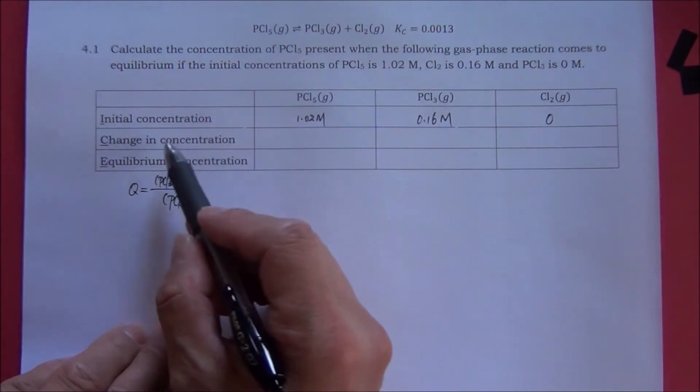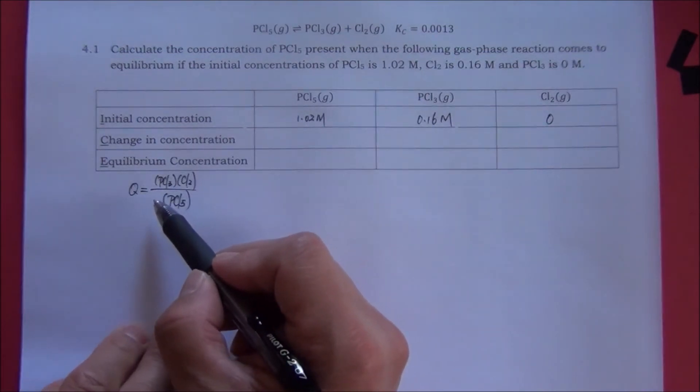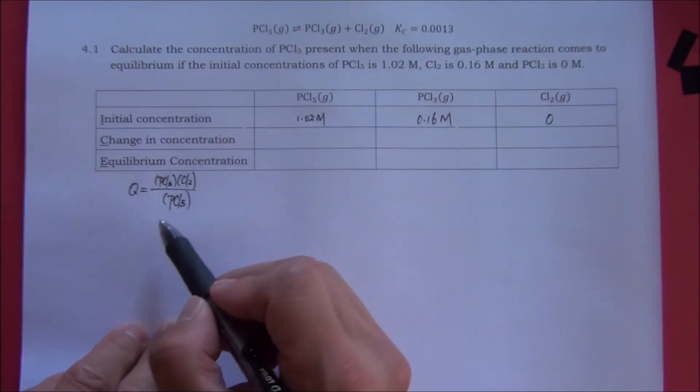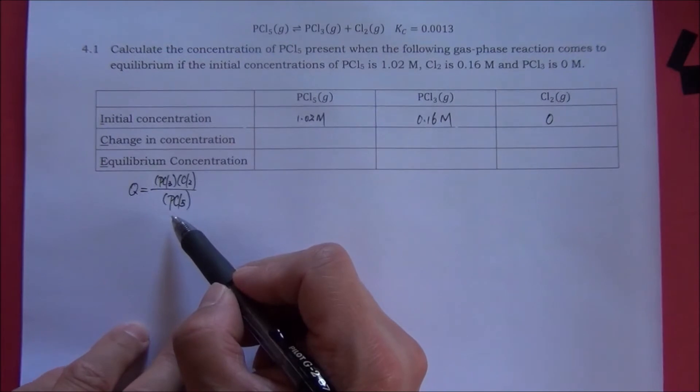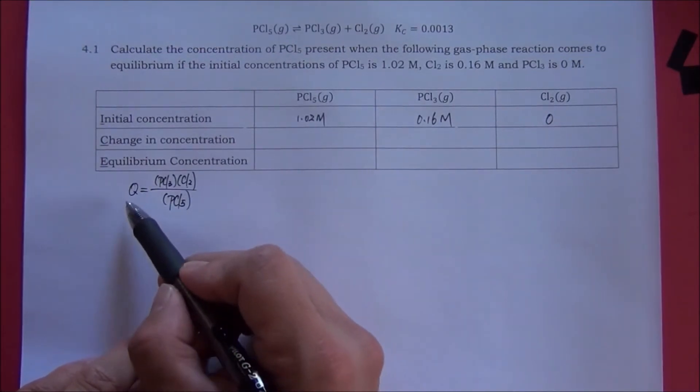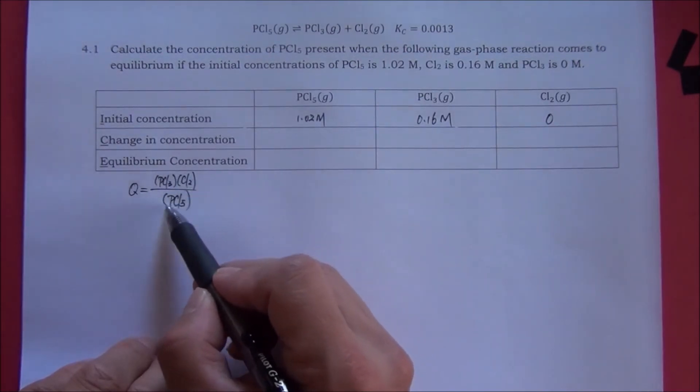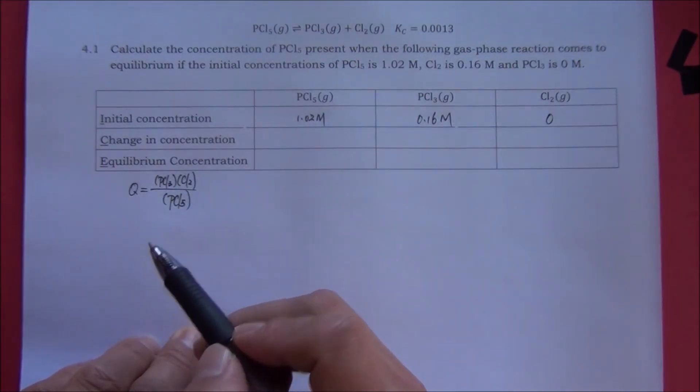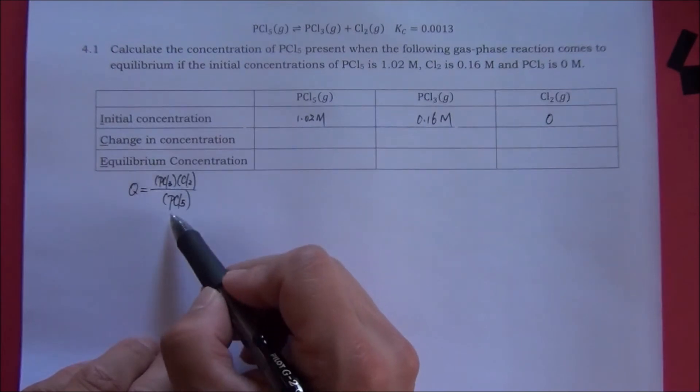This is the definition of the reaction quotient. We can say that the reaction quotient is very similar to the equilibrium constant. The only difference is that the reaction quotient uses the concentration, not the equilibrium concentration of the reactants and the products.